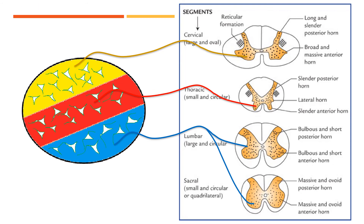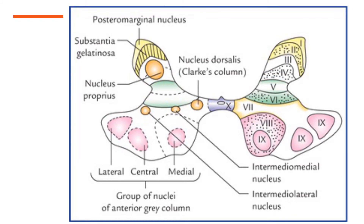The fibers are projected to laminar numbers 5, 6, and 7, corresponding to the termination of the corticospinal tract. That is about the output of the red nucleus.